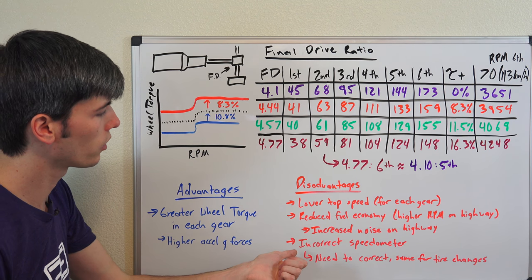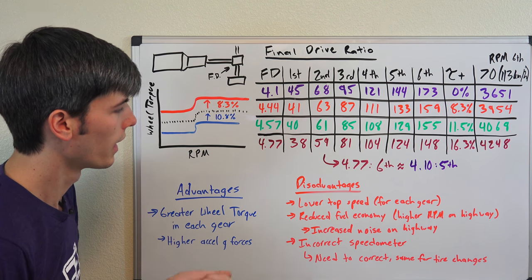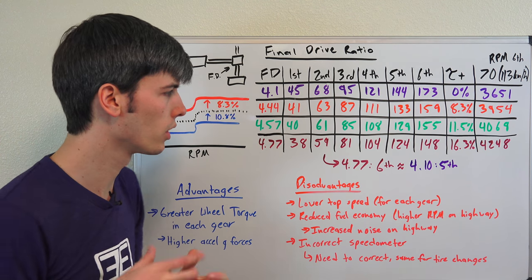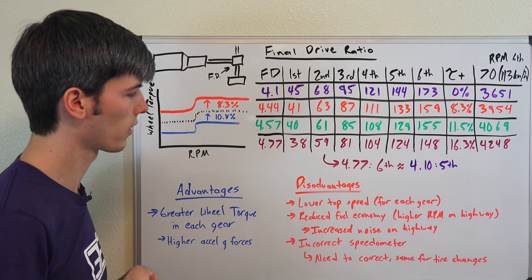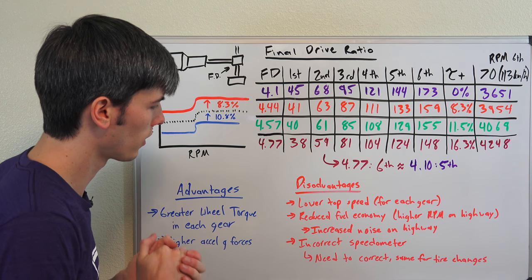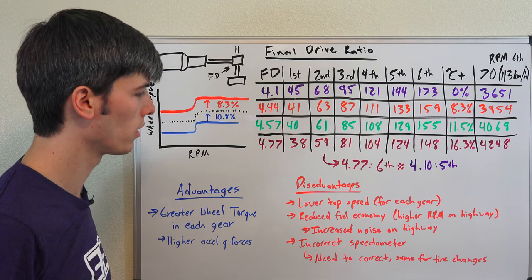Now the other big thing is you're going to have an incorrect speedometer reading. And so there are devices out there which you can use to correct to make sure that your speedometer actually reads the correct mile per hour. So you don't get tickets, things like that. And then you actually know what speed you're going.